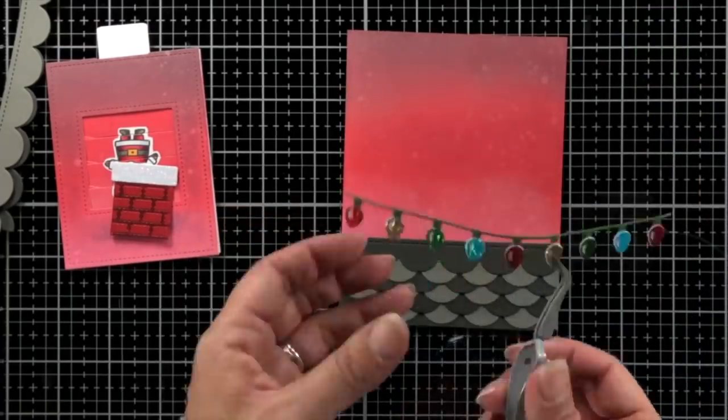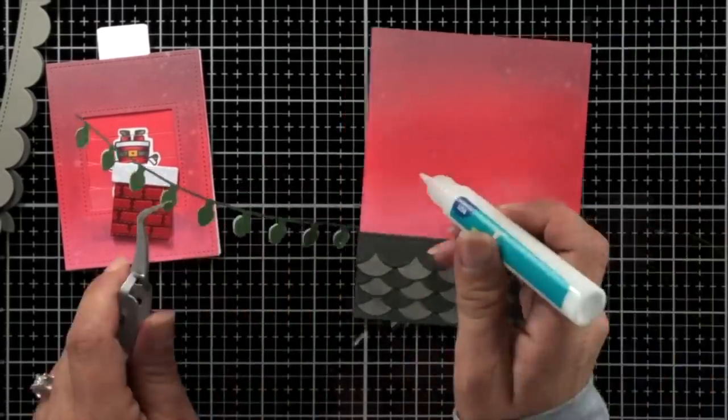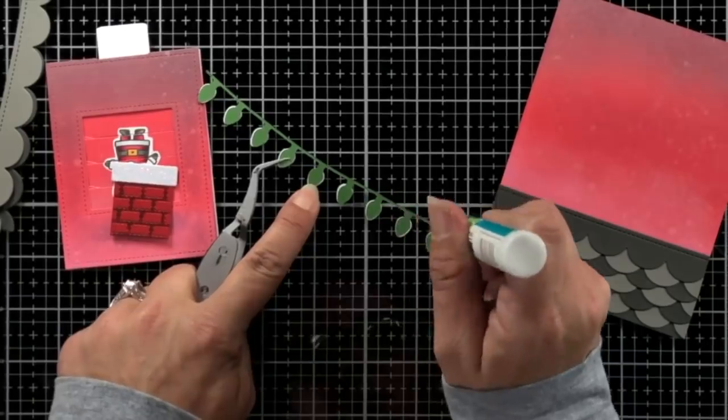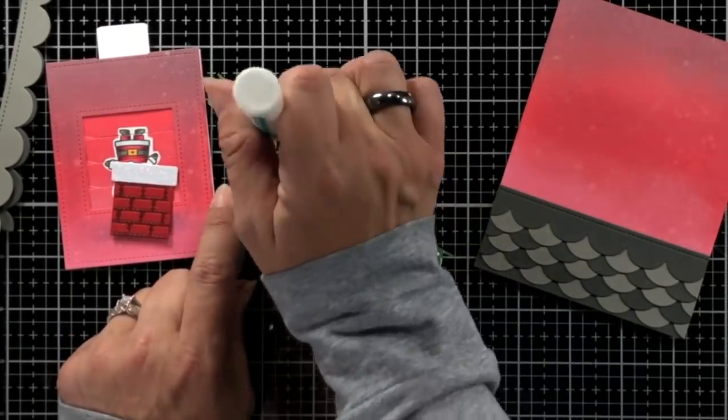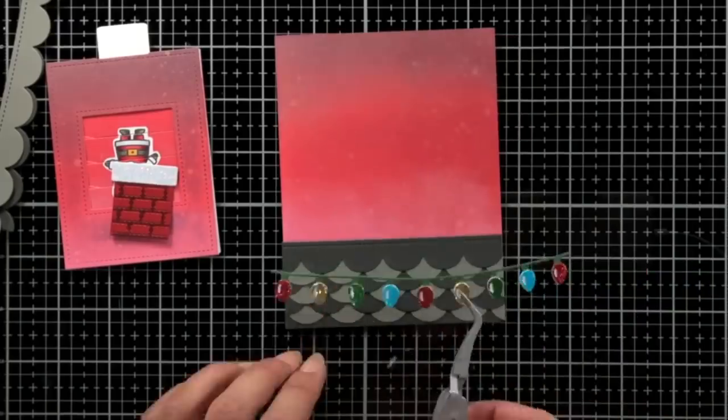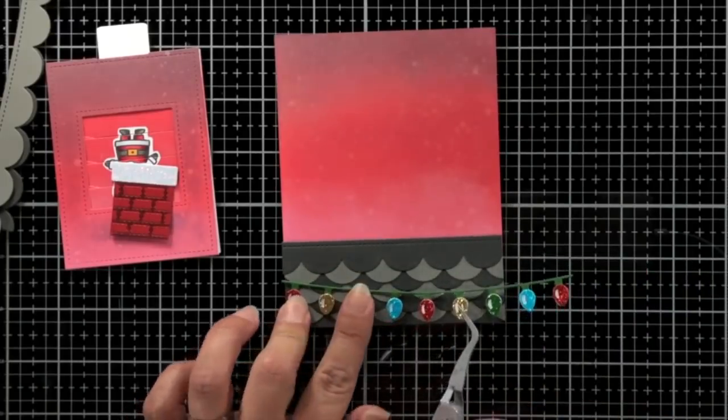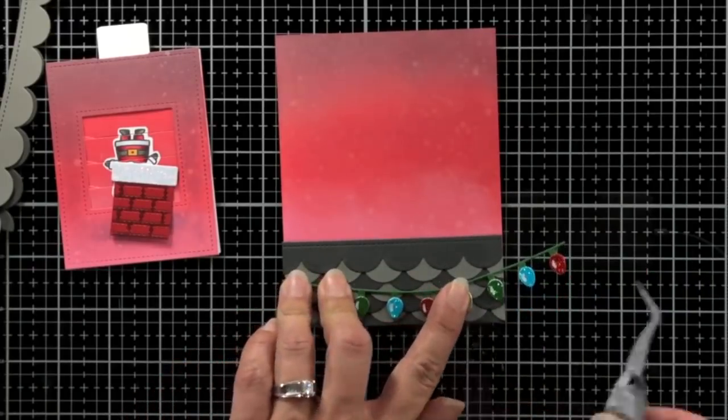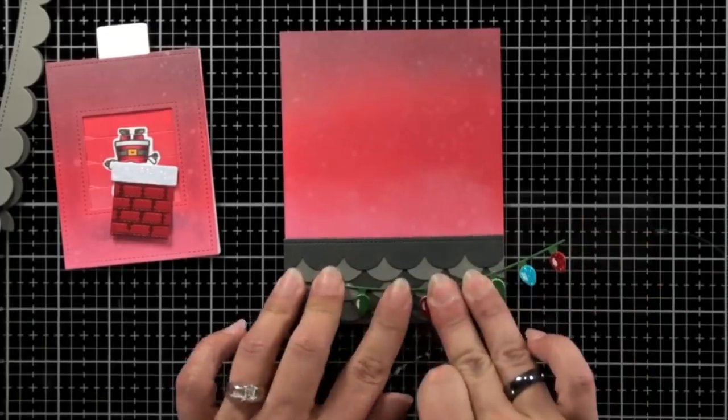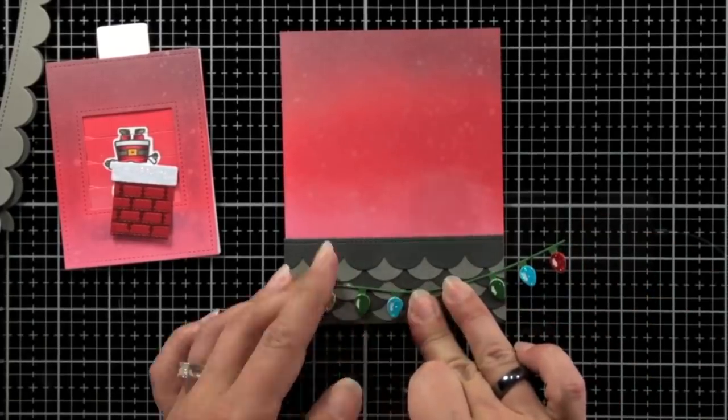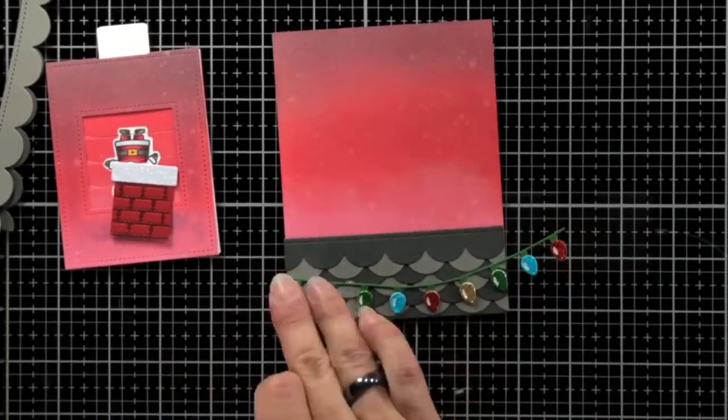And then I can go ahead and add our lights. So one of the reasons I do this in sections is just so I know where everything is going and where everything fits. It does take me a little longer, but I just found this a lot easier when I kind of do it in sections. So this kind of completes our background.